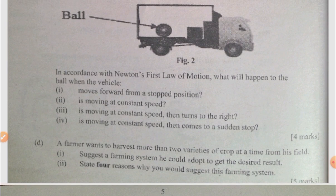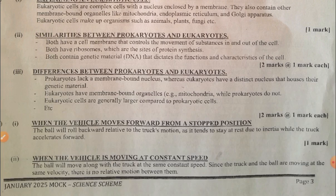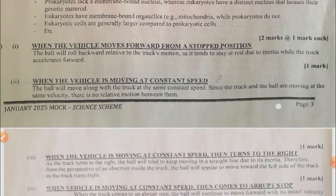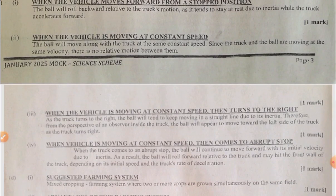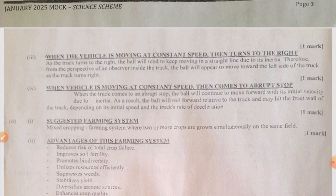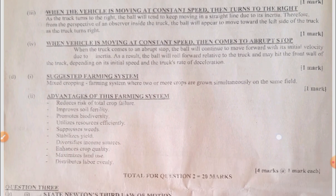Question 2d involves a farmer who wants to harvest more than two varieties of a crop at a time from his field — immediately on reading this question, you should recognize the concept being discussed. For Newton's first law scenarios: when the vehicle moves forward from a stop, what happens to the ball? When moving at constant speed, what happens? When moving at constant speed and turning right, what happens? When moving at constant speed and coming to an immediate stop, what happens to the ball?